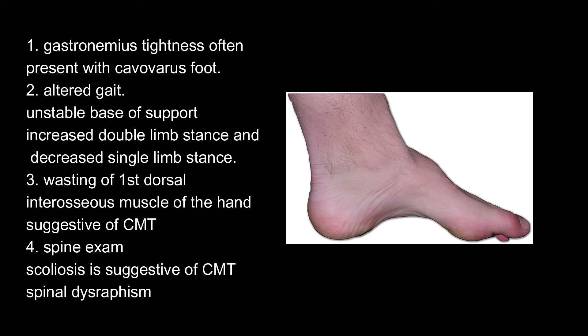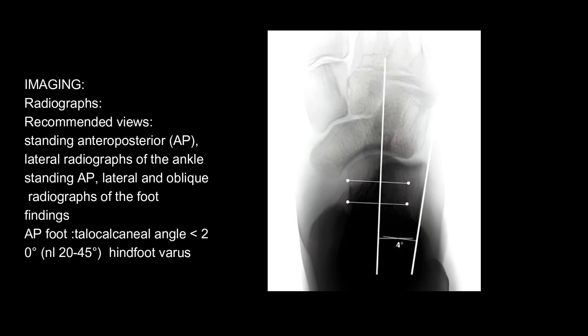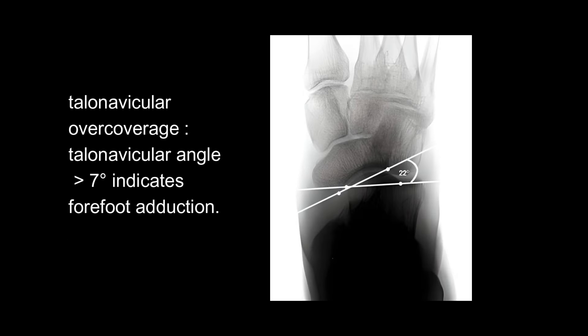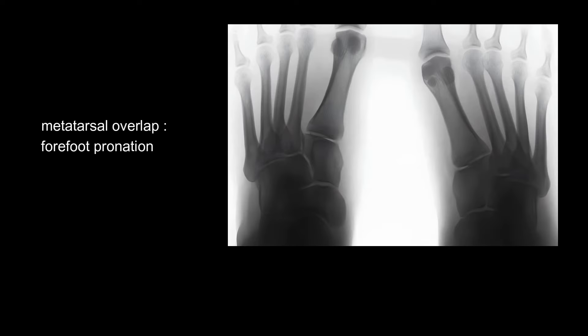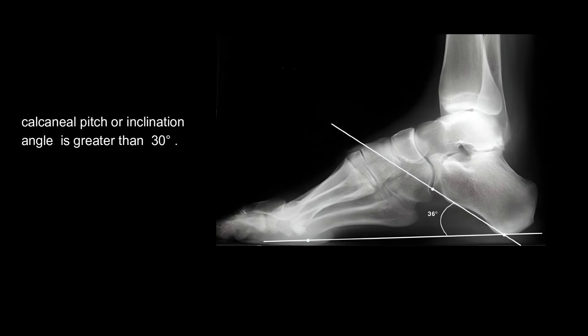Spine exam: scoliosis and spinal dysraphism are suggestive of CMT. Imaging: recommended views include standing AP and lateral radiographs of the ankle, and standing AP, lateral, and oblique radiographs of the foot. On AP foot, the talocalcaneal angle normal is 20–45 degrees. Hindfoot varus, talonavicular overcoverage, talonavicular angle greater than 7 degrees indicates forefoot adduction, metatarsal overlap, and forefoot pronation are noted.